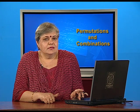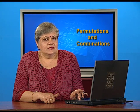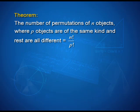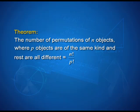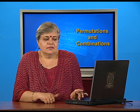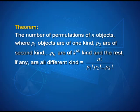In order to find this permutation, we have two simple results. The first says that the number of permutations of n objects where p objects are of the same kind — for example, in the word 'mom' you have two M's and the rest are different — is n! divided by p!. The second result covers multiple repeated kinds: if there are p1 objects of one kind, p2 of a second kind, and so on up to pk of the kth kind and the rest are all different, then the number of permutations is n! divided by p1!·p2!···pk!.